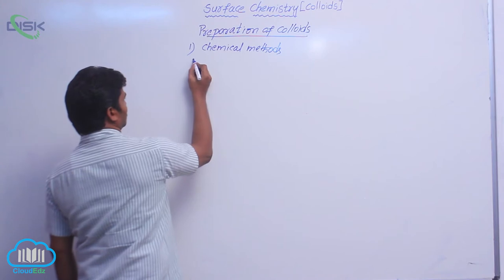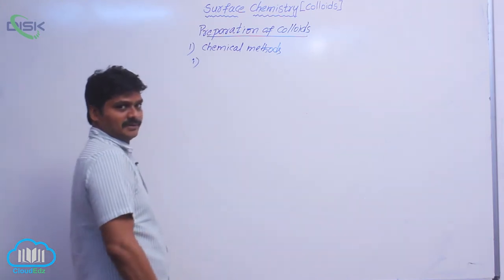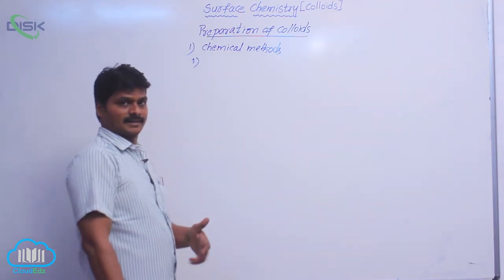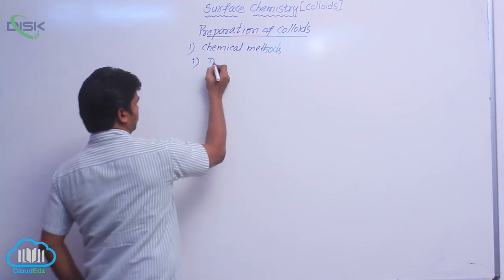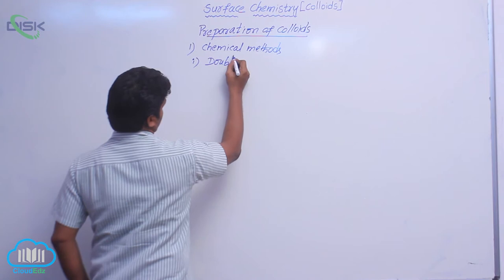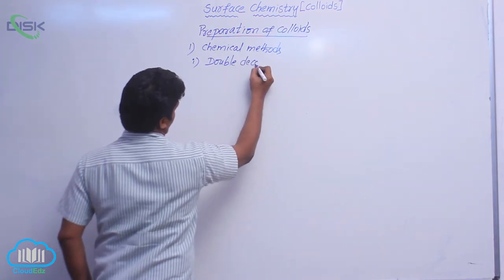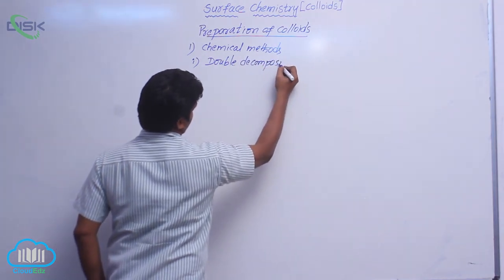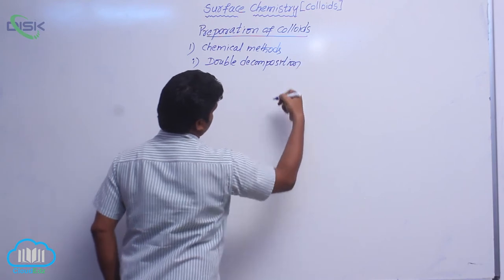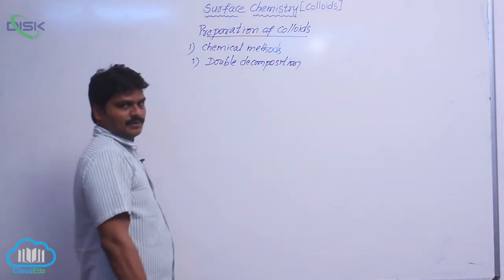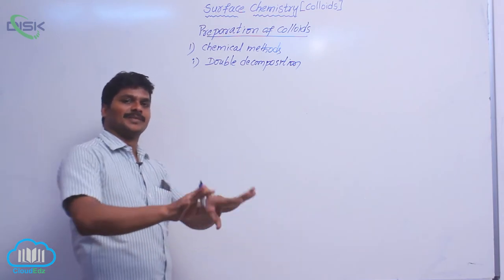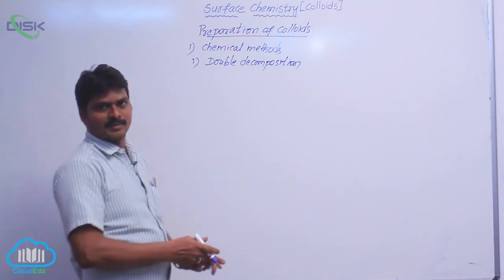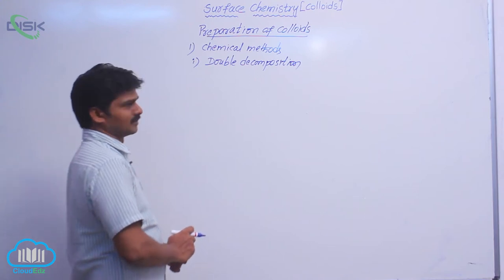There are several methods for the preparation of colloids by chemical reactions. First one: double decomposition method. Double decomposition means if two reactants are there in a reaction, both reactants will be decomposed during a chemical reaction. That is double decomposition.